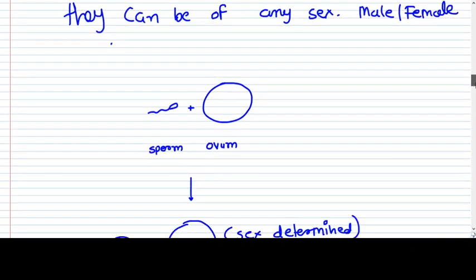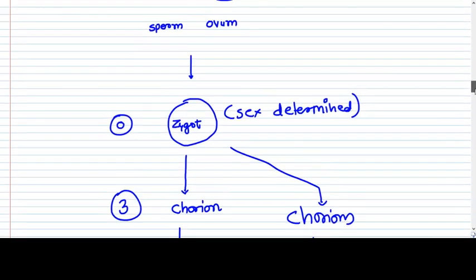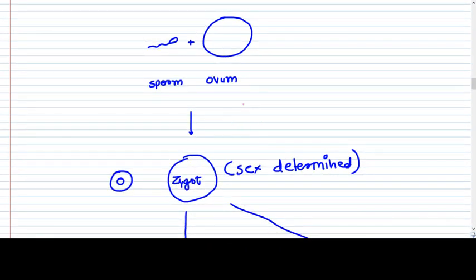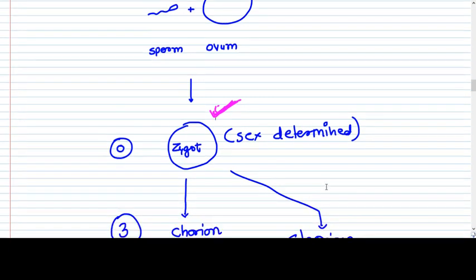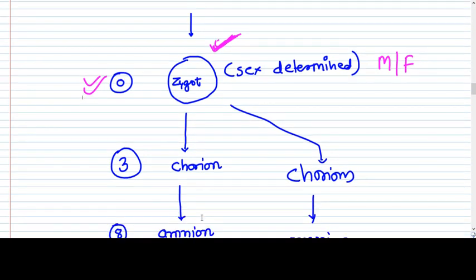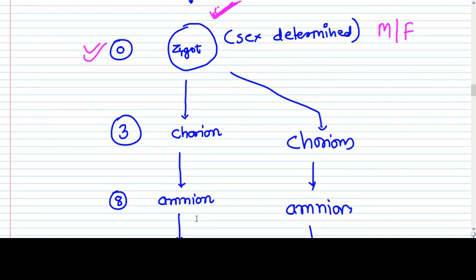Now let's go towards monozygosity, which means only one zygote is formed. Because there was only one sperm and only one ovum. From one sperm and one ovum, only one zygote is formed. And as I already told you, sex is determined the moment when the zygote is formed. So the sex is determined — either male or female — on day zero. After formation of the zygote, it can divide into two.